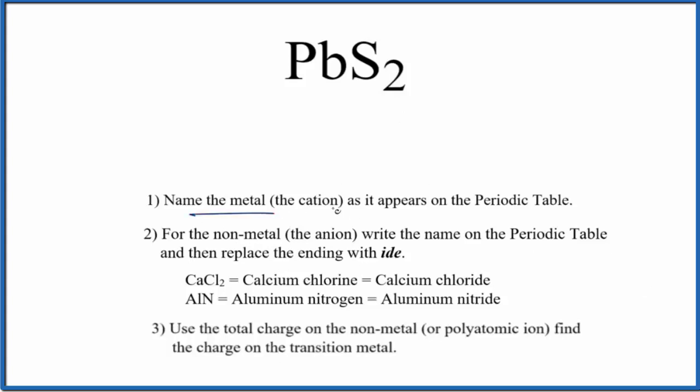First we'll name the metal, that's the cation, the positive ion, that's the lead. So lead. And then we're going to write the name for the nonmetal, the anion, that's the sulfur here. We're going to replace the ending, this UR here, with IDE. And that gives us lead sulfide.